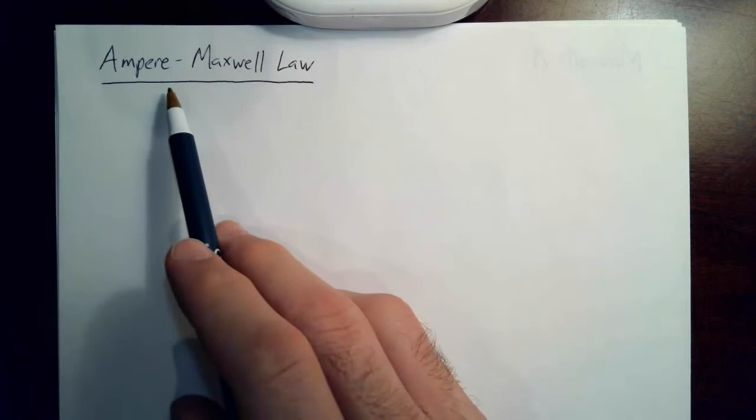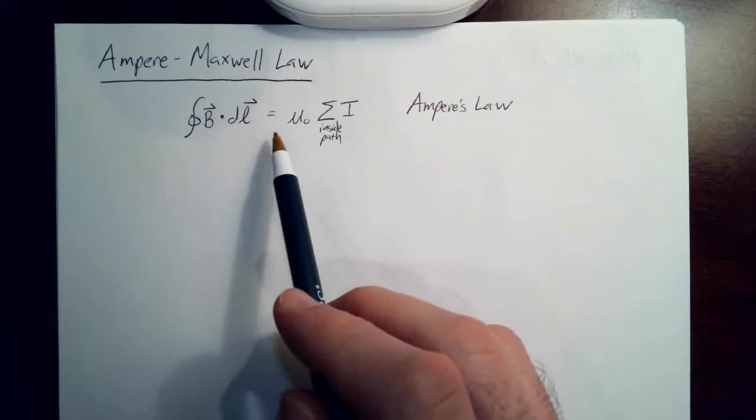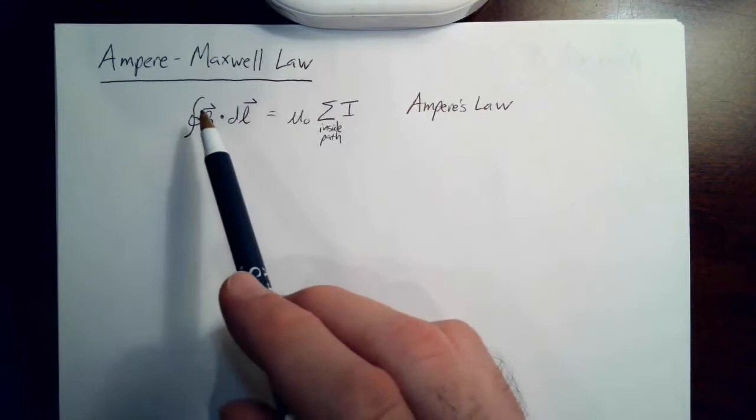In this video I'd like to discuss the last remaining piece that we need in order to write down Maxwell's equations, and that is the Ampere-Maxwell law. I'm going to start with Ampere's law and show you that Ampere's law creates a contradiction that we need to solve. Here's Ampere's law — it basically gives us a way of finding the magnetic field due to a current.